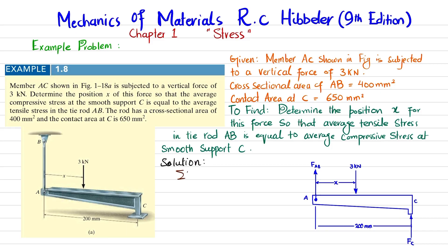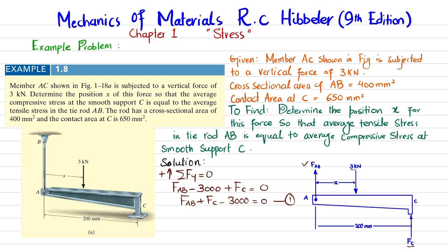The first equation of equilibrium: the sum of all forces along the Y direction must equal zero, with upward forces taken as positive. FAB is upward (positive), the 3 kN force is downward (negative, equals 3000 N), and FC is upward (positive). So: FAB + FC − 3000 N = 0. This is equation number 1.